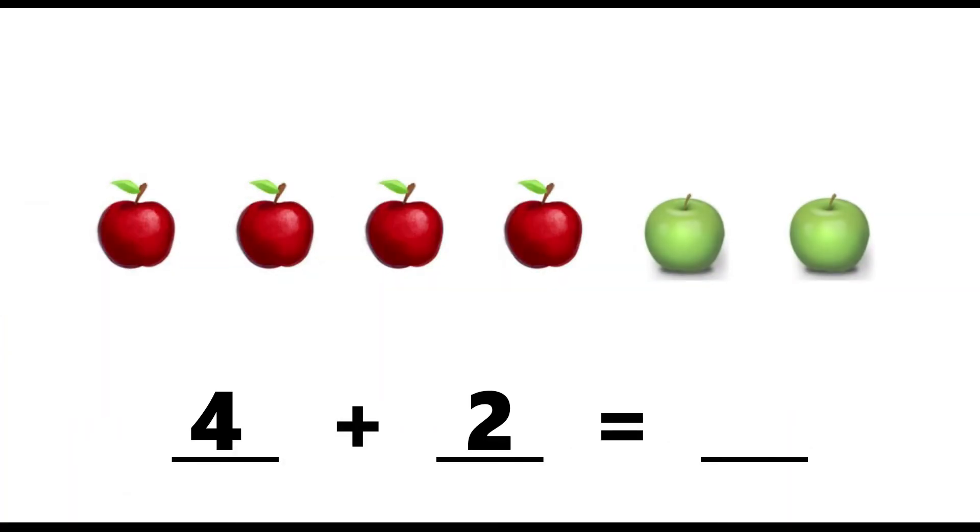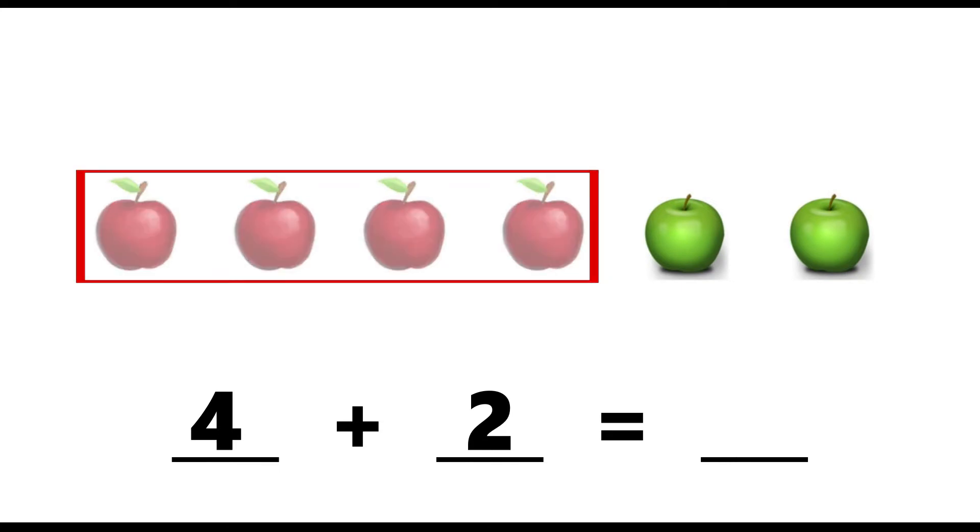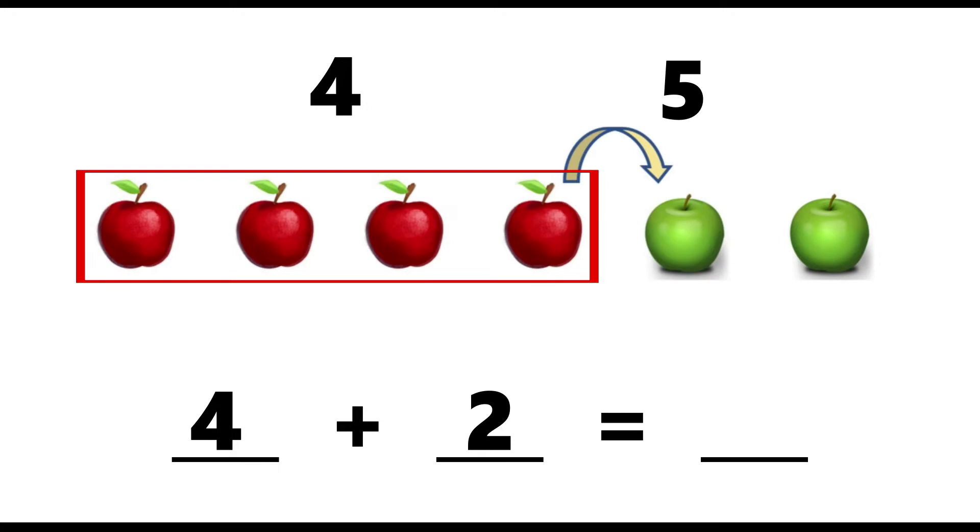4 plus 2. Instead of counting from 1, I already know there are 4 red apples here. So let's start from 4 and count on: 4, 5, 6. So 4 plus 2 equals 6.